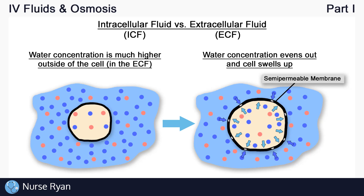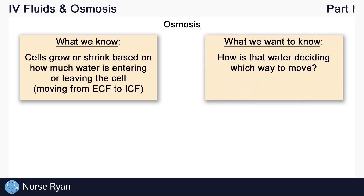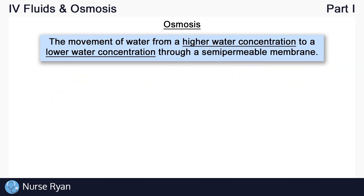We can start to see how we might be able to manipulate the cell's internal environment — the intracellular fluid — by altering the extracellular fluid. Let's get a deeper understanding of what is actually causing the cell to either grow or shrink, because it can shrink too if we have the opposite scenario. The cell is either growing or shrinking based on how much water is entering or leaving it, and the water is moving because of a process called osmosis. Osmosis can be defined as the movement of water from a higher water concentration to a lower water concentration through a semi-permeable membrane.